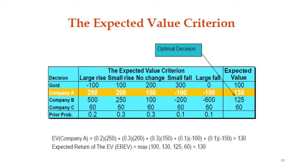Starting with a simple example: we were given the payoff table and the probabilities. We discussed EVPI - expected value of perfect information - and the expected return. These are the payoff values for the player programs.